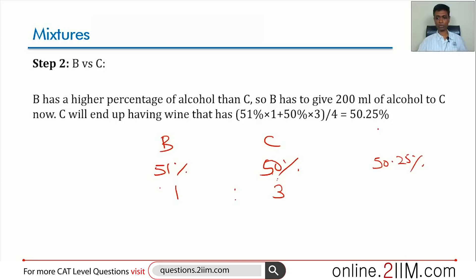1 is to 3, broken in the ratio of 1 is to 3, we'll get 50.25%. C will now have 800 ml, B has 600, A will have 400. C now has 800. A has 60%, B 51%, C has 50.25%.